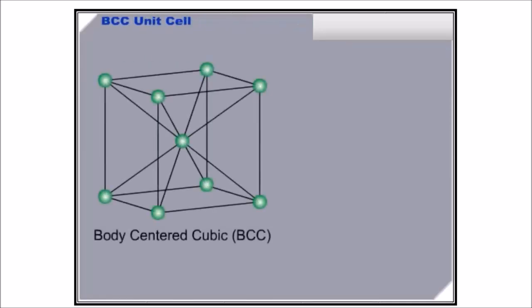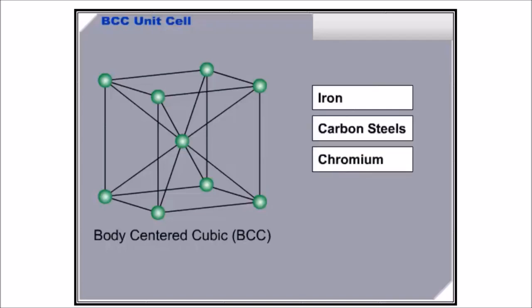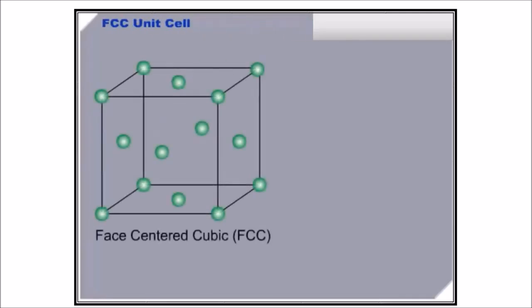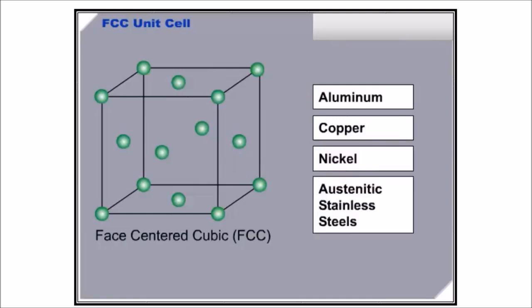The BCC unit cell can be described as a cube with an atom at each of the eight corners and a single atom at the center of the cell. Among the common BCC metals are iron, carbon steels, chromium, molybdenum, and tungsten. The FCC unit cell can be envisioned as a cube with atoms at each of the eight corners and with one atom at the center of each of the six faces. Among the common FCC metals are aluminum, copper, nickel, and austenitic stainless steels.